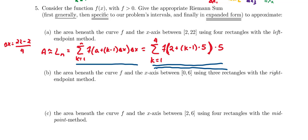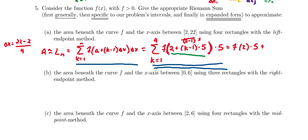Now let's write these out in expanded form. When k equals 1, the expression (k minus 1) evaluates to zero, so we get f of (2 plus 0 times 5), which is f(2), times 5. When k equals 2, we plug in two, getting (2 minus 1) times 5, which is one copy of 5 added to 2. So that gives us f(7).